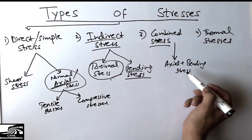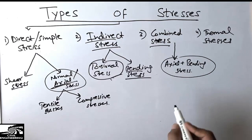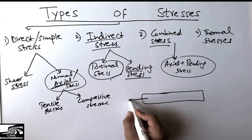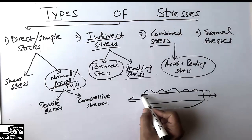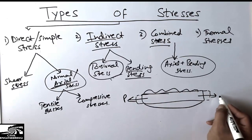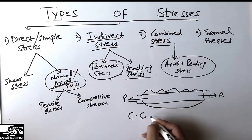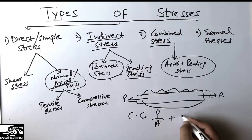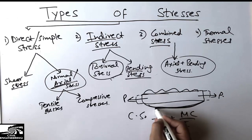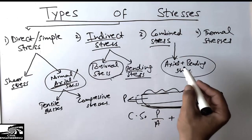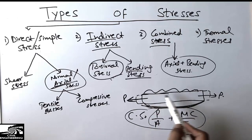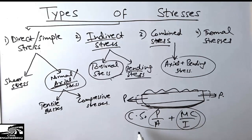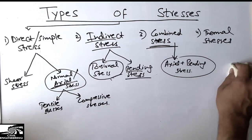Combined stress is simply the combination of axial and bending stresses. For example, if a beam is subjected to both axial load and bending, two types of stress are created simultaneously. The combined stress is found as P divided by A (axial stress) plus or minus MC divided by I (bending stress). This is used for members subjected to two types of stress at the same time.